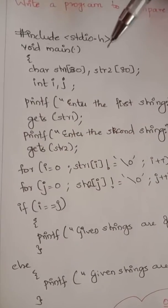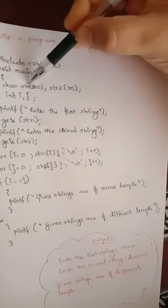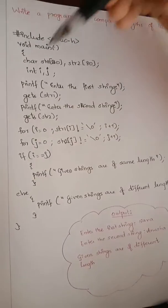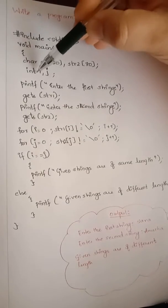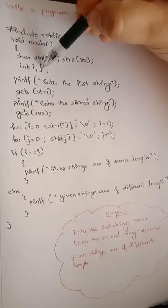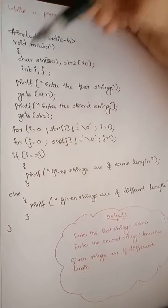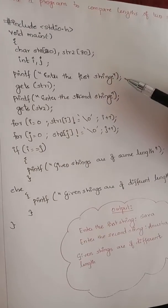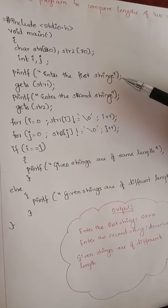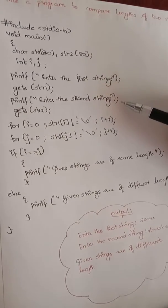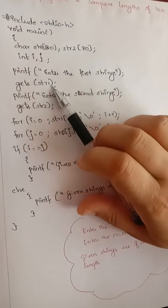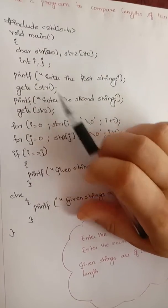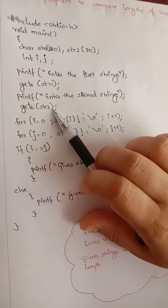You need to compare the length of two strings, so you need to declare two strings: str1 and str2. You need to use two loops, an i loop and a j loop, so you are declaring the i and j variables of type integer. Here in this program, you have to get the two strings — the first string and the second string. So first, printf 'enter the first string', gets str1. Then you are getting the second string.